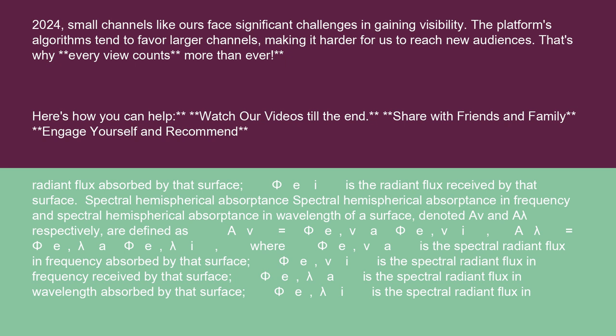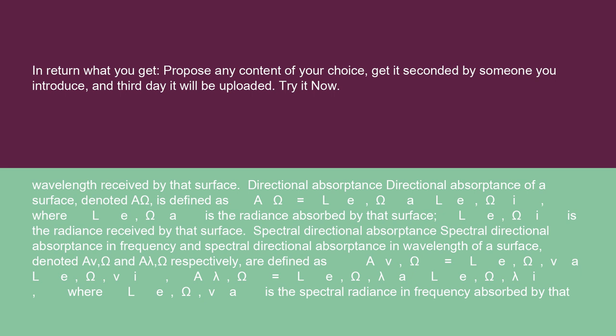Spectral hemispherical absorptance in frequency and spectral hemispherical absorptance in wavelength of a surface, denoted Aν and Aλ respectively, are defined as Aν = φEν / φEνi and Aλ = φEλ / φEλi. Here φEν is the spectral radiant flux in frequency received by that surface, φEλ is the spectral radiant flux in wavelength absorbed by that surface, and φEλi is the spectral radiant flux in wavelength received by that surface.